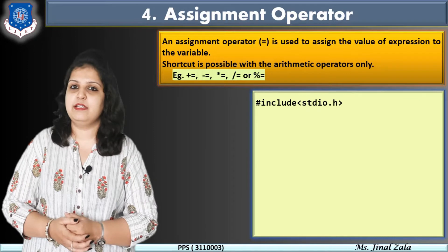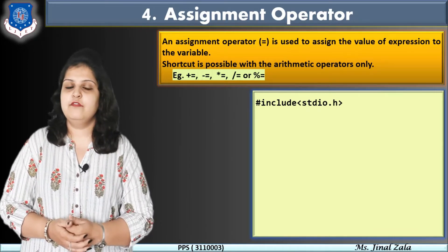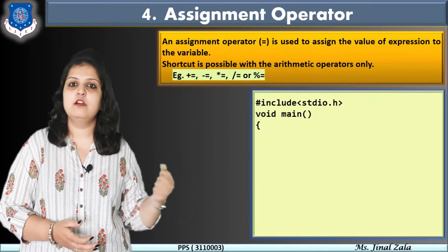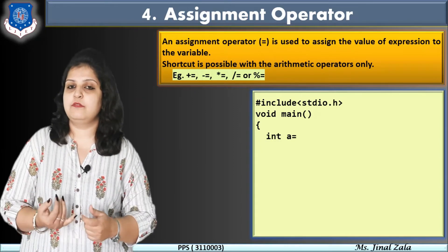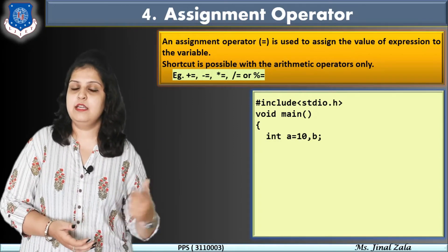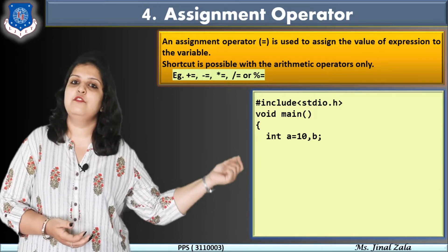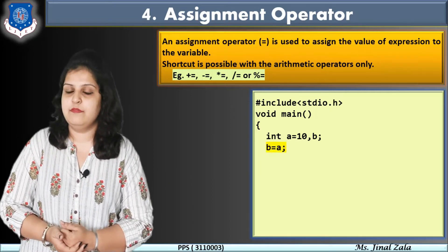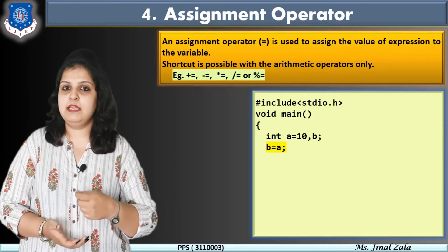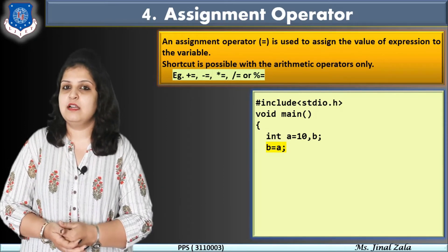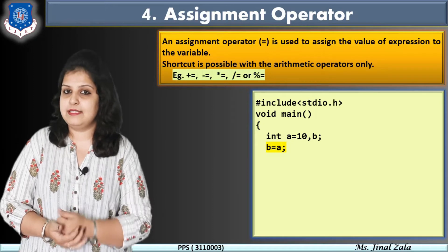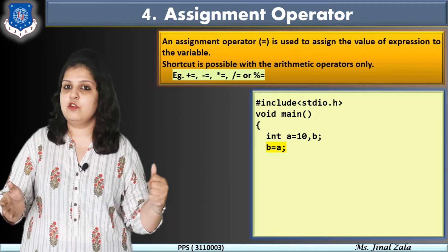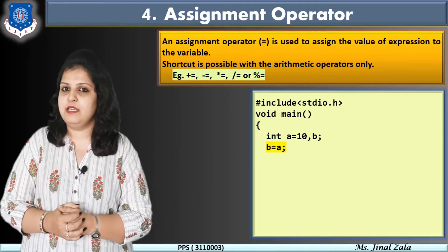Let's see an example of how to write a program using assignment operators. First, include the library stdio.h, then write the code in the main function — void main. I am using two variables: integer A = 10, which assigns the value 10 to A using the assignment operator. The second variable is B. Then B = A, which copies the value of A into B, so B becomes 10.